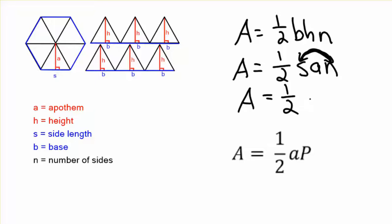So you just rewrite it as one-half apothem times perimeter. It's a very simple formula. Don't get overwhelmed with it. It's very easy to use. So again, you can use either one of these formulas and don't get overwhelmed.